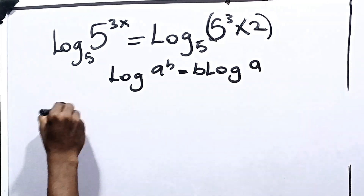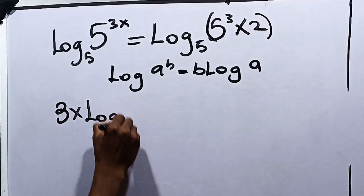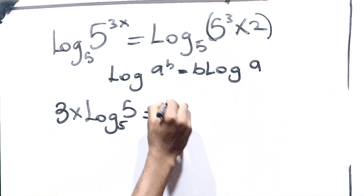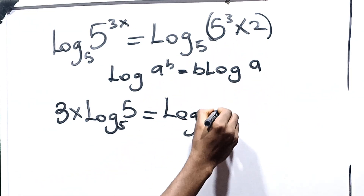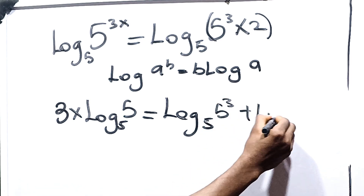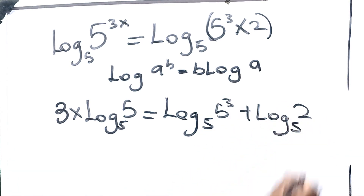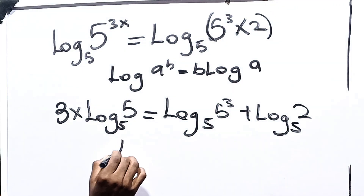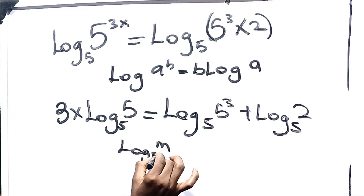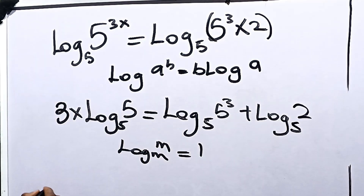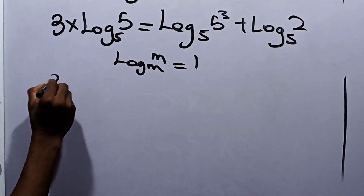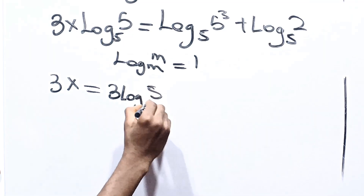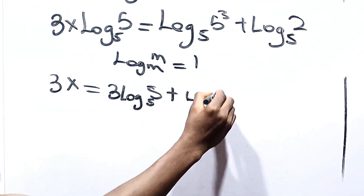Applying this: logarithm of 5 raised to the power 3x gives us 3x multiplied by logarithm of 5. On the right side, we split and add: logarithm base 5 of 5 cubed plus logarithm base 5 of 2. Recall that the logarithm of m to base m is equal to 1. So we can write this as 3x equals 3 multiplied by logarithm base 5 of 5 plus logarithm base 5 of 2.